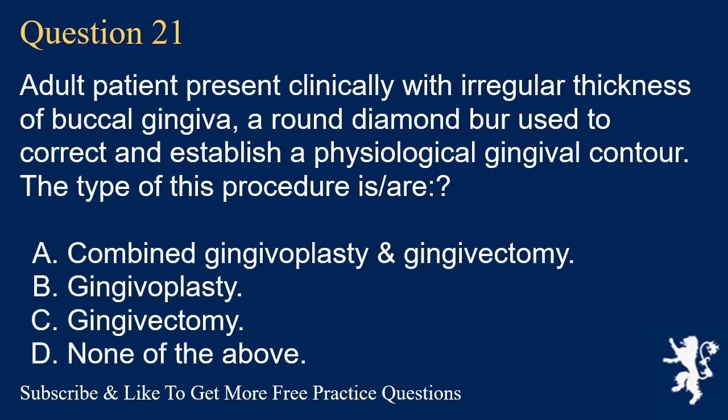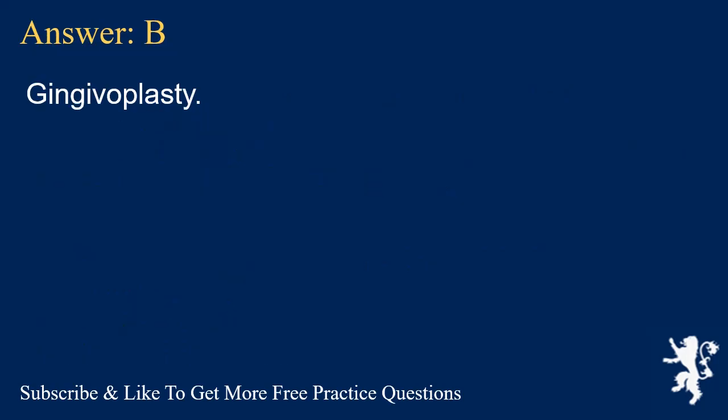Question 21. An adult patient presents clinically with irregular thickness of buccal gingiva. A round diamond bur is used to correct and establish a physiological gingival contour. The type of this procedure is? A. Combined gingivoplasty and gingivectomy. B. Gingivoplasty. C. Gingivectomy. D. None of the above. Answer: B. Gingivoplasty.